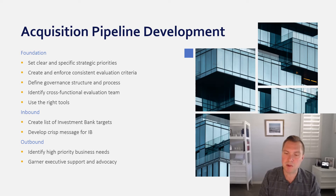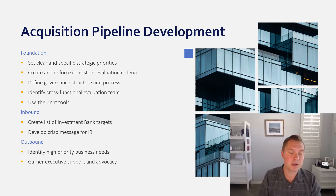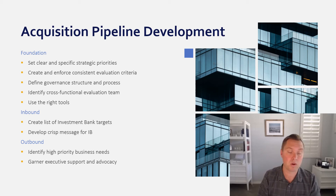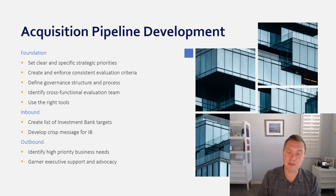Fourth, and related to the third point, is identifying a cross-functional team that may not necessarily be in the decision-making process but needs to be involved. Depending on your company, this could include a legal department, an HR department, a real estate group, or perhaps even a regulatory body that needs to be involved and informed in the process.